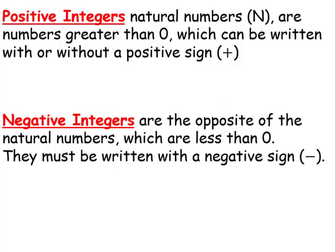Positive integers, also known as our natural numbers, are numbers greater than 0, which can be written with or without a positive sign, such as 7 and positive 7.